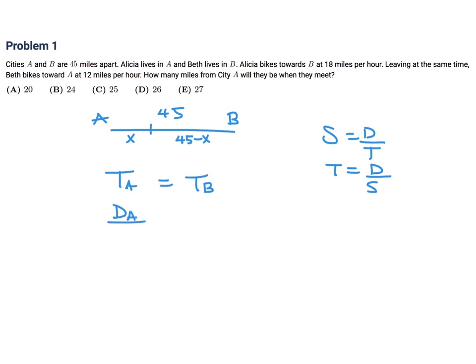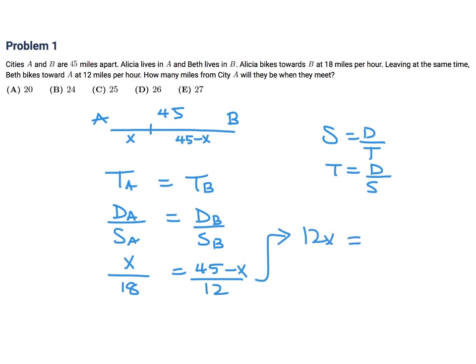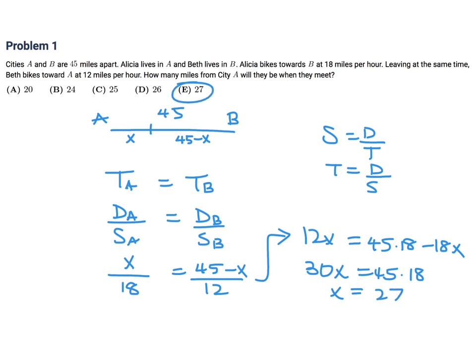That would be DA over SA — the distance and speed for Alicia — and this would be the distance and speed for Beth. The distance I've denoted as X, the speed is 18. This distance is 45 minus X, and that speed was 12. So cross multiply: you get 12X equals 45 times 18 minus 18X, so 30X equals 45 times 18, which looks like 1.5 times 18, so X equals 27. Therefore the answer is E.